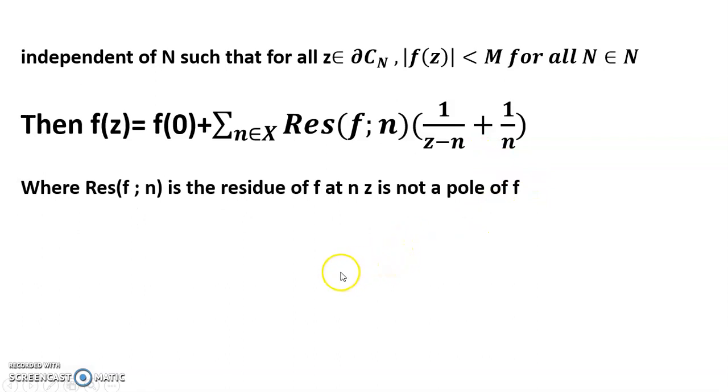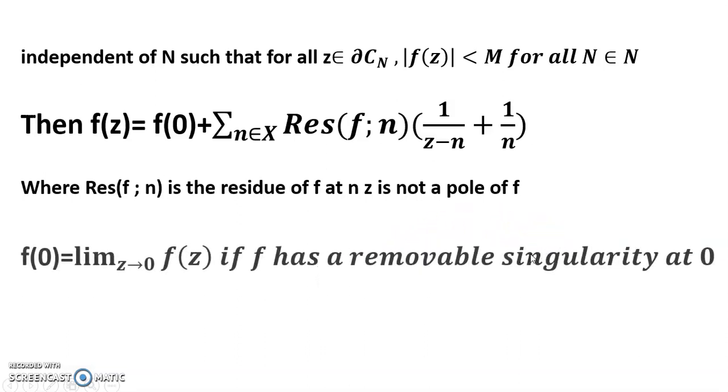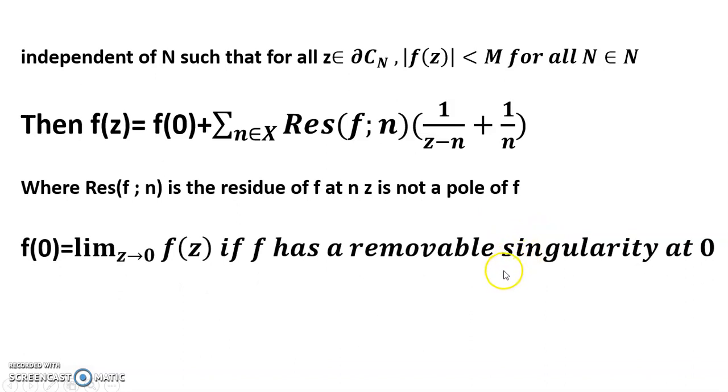And where residue f at n is the residue of f at n, z is not a pole of f. If f(0) equals limit z tends to 0 of f(z), if f has a removable singularity at 0.